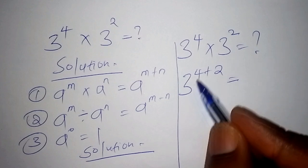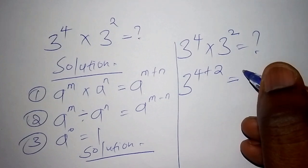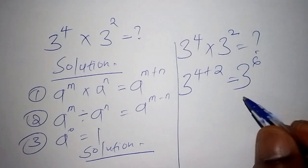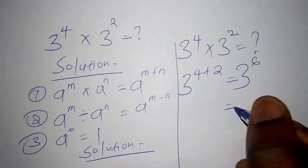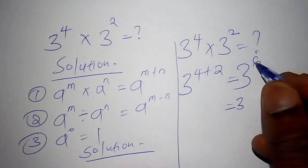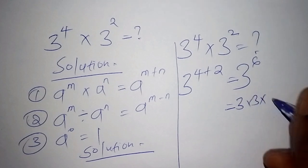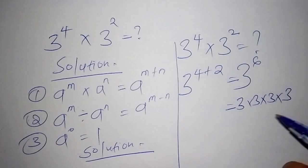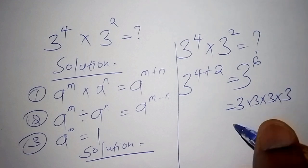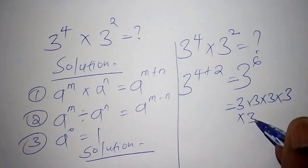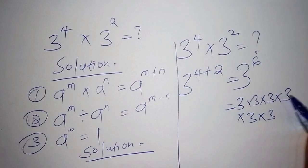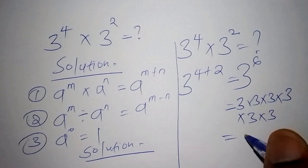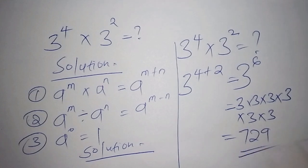4 plus 2 is 6, so we have 3 to the power of 6. Working that out means multiplying 3 six times: 3 × 3 × 3 × 3 × 3 × 3. When we work all this out together, the answer is 729. That's the correct answer for multiplication of exponents.